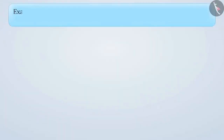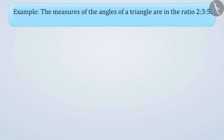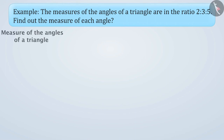The measures of the angles of a triangle are in the ratio of 2 is to 3 is to 5. Find out the measure of each angle. We are given that the measures of the angles of a triangle are in the ratio of 2 is to 3 is to 5.